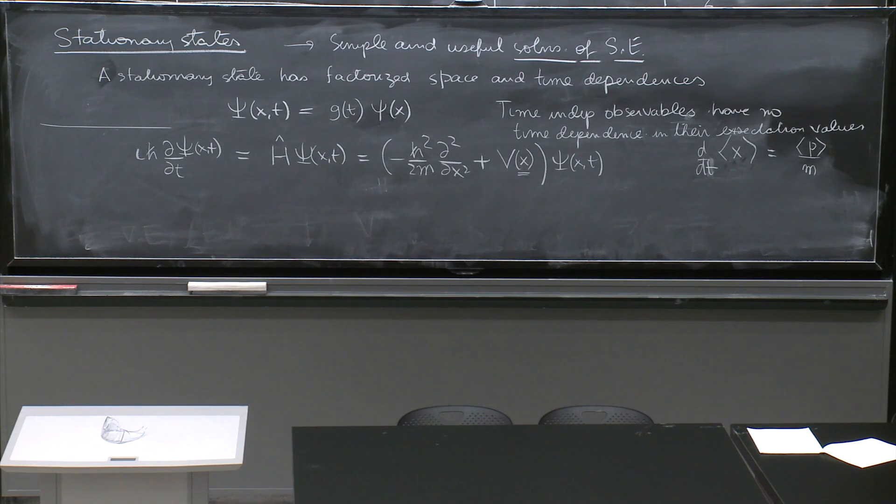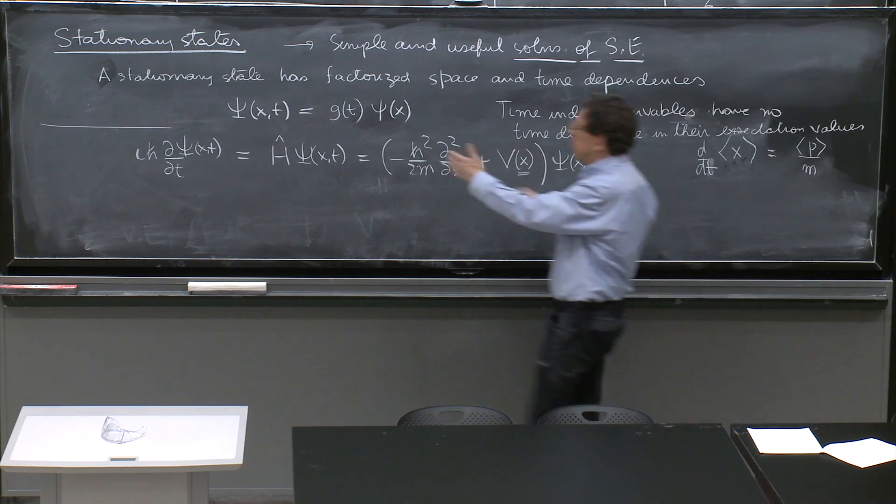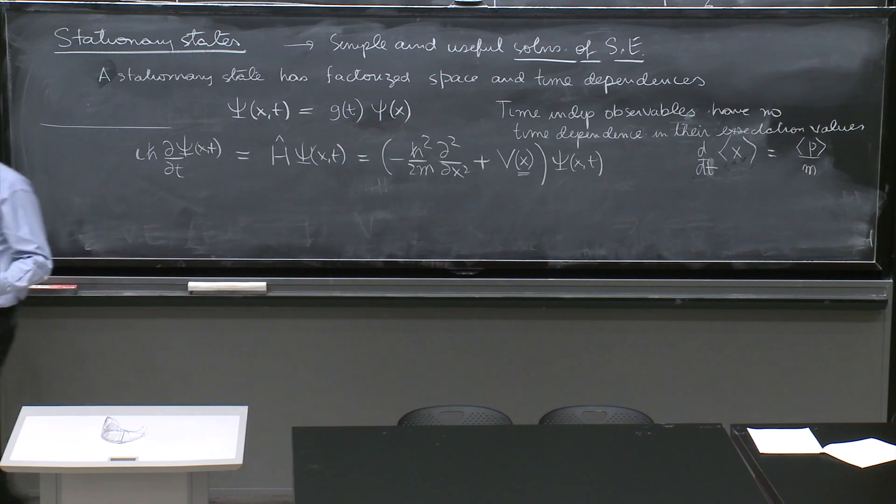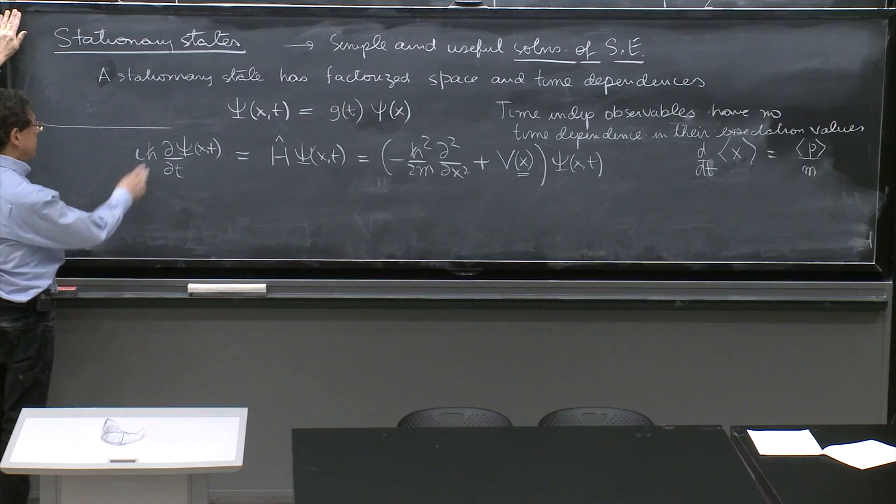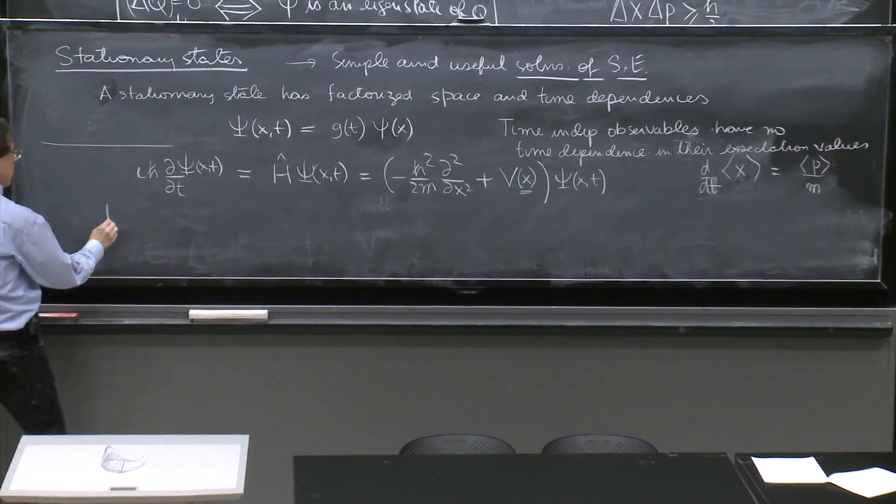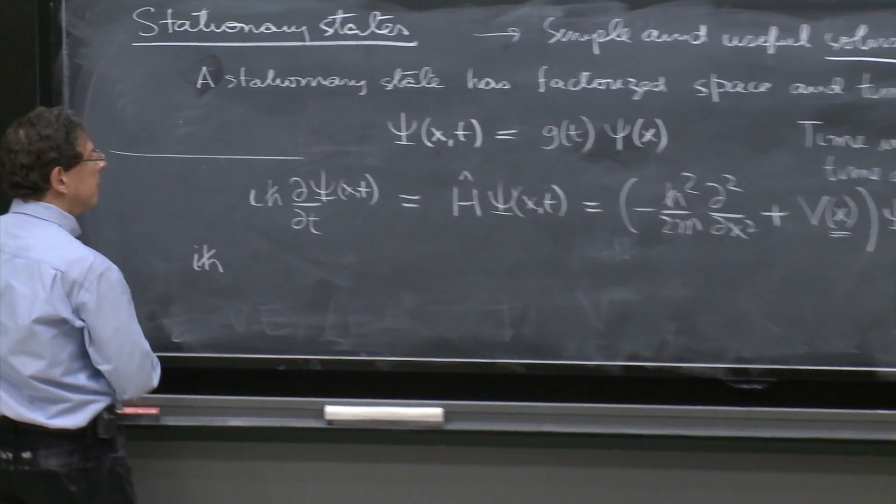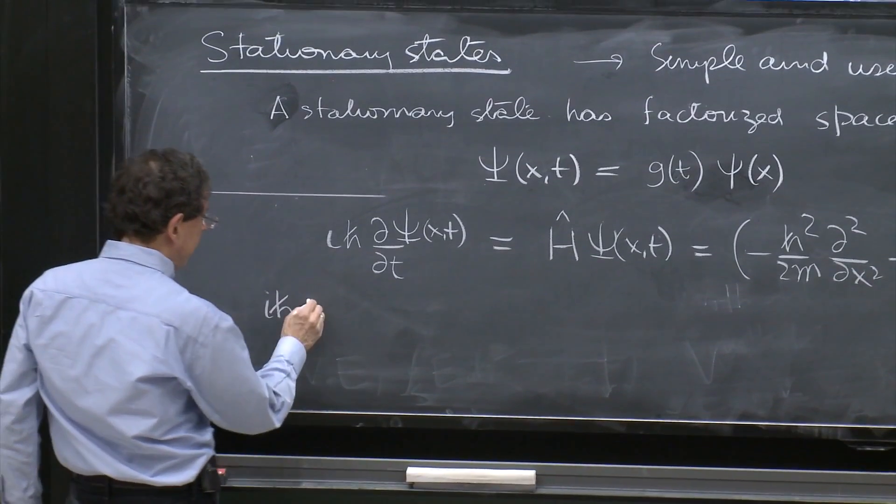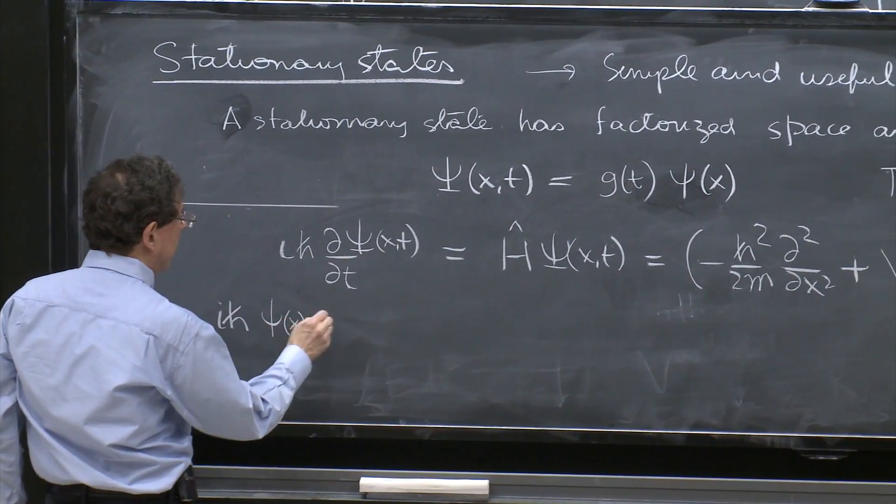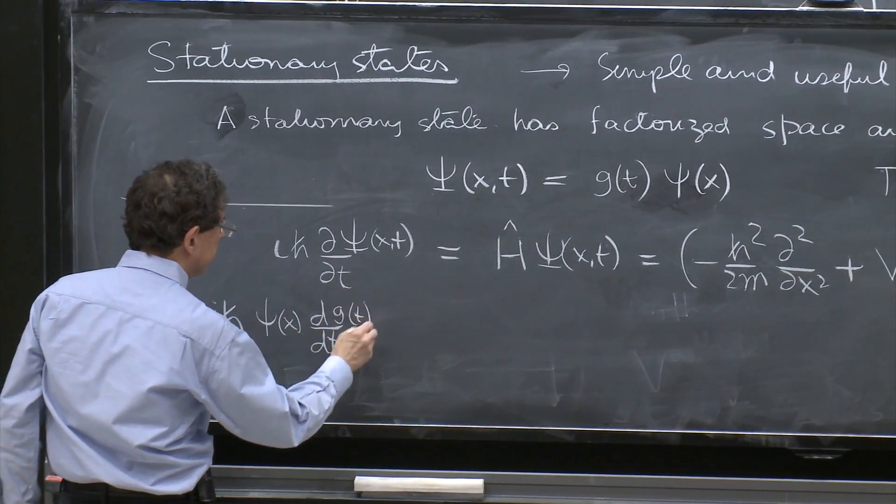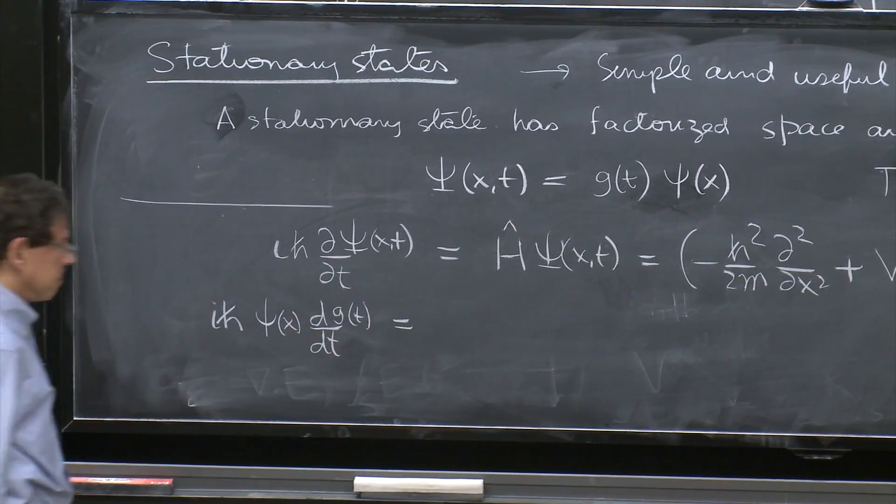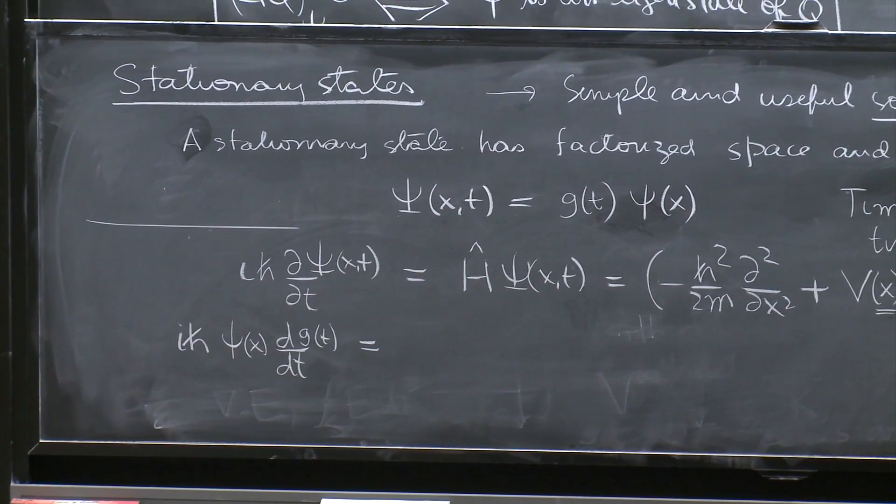So what we do next is to simply substitute the value of the wave function into the differential equation and see what we get. So on the left-hand side, we will get i h-bar. The psi of x goes out, but you have d/dt, now a normal derivative of g.